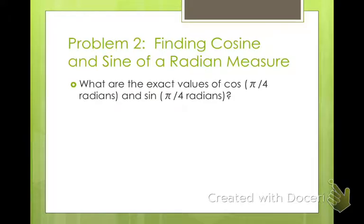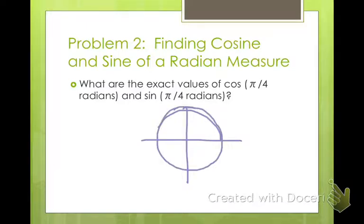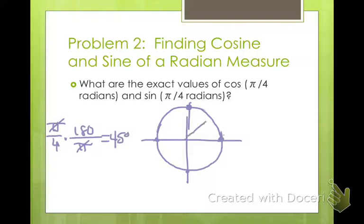What are the exact values of cosine π/4 radians and sine π/4 radians? We're going to construct a unit circle. This is a unit circle where each one of these points represents a value of 1, centered on the origin. π/4, we're going to convert: multiply by 180, the π cancels. 180 divided by 4 is 45 degrees. So we're looking at a 45 degree angle right here.